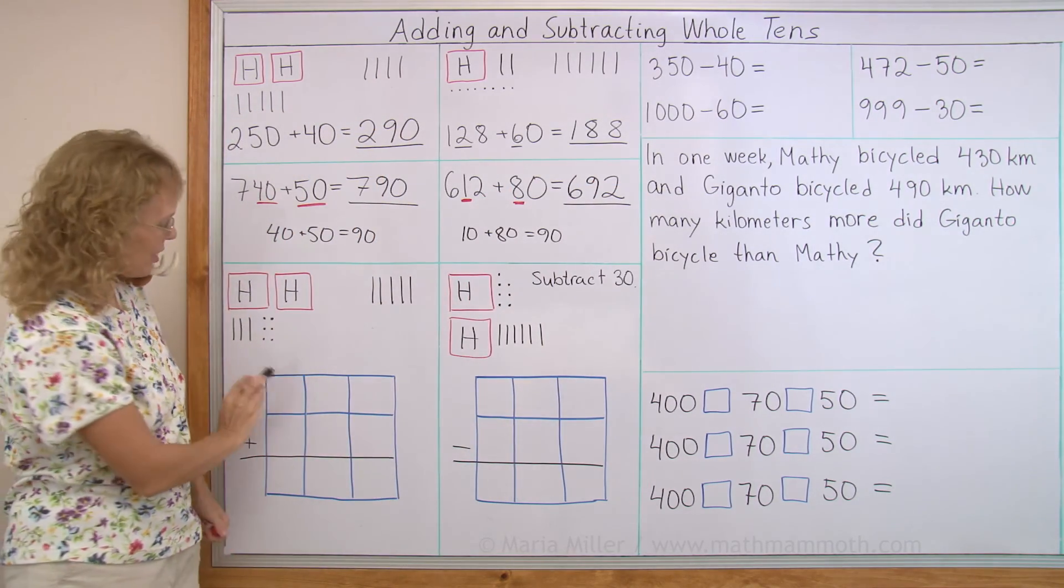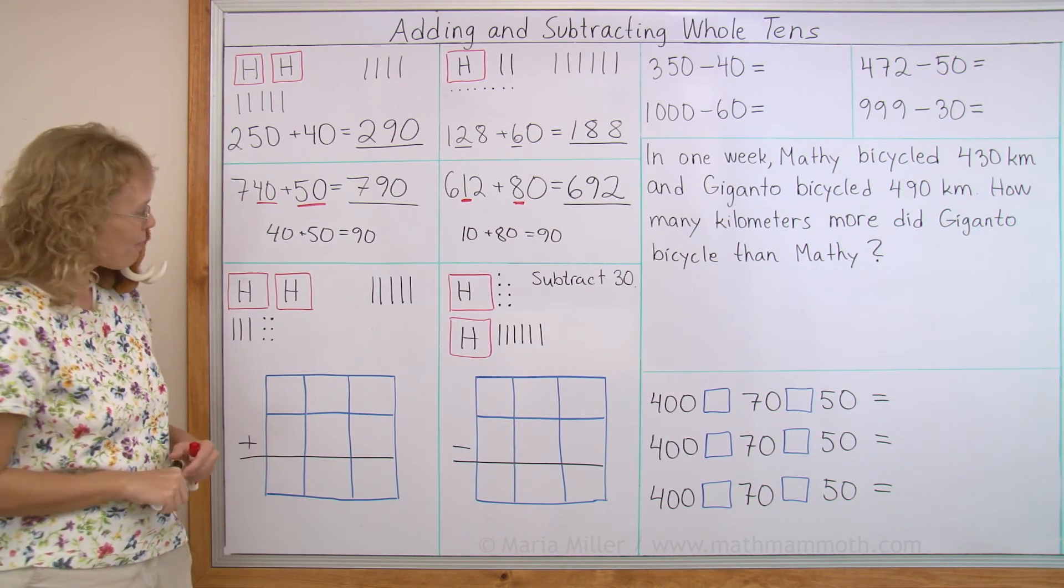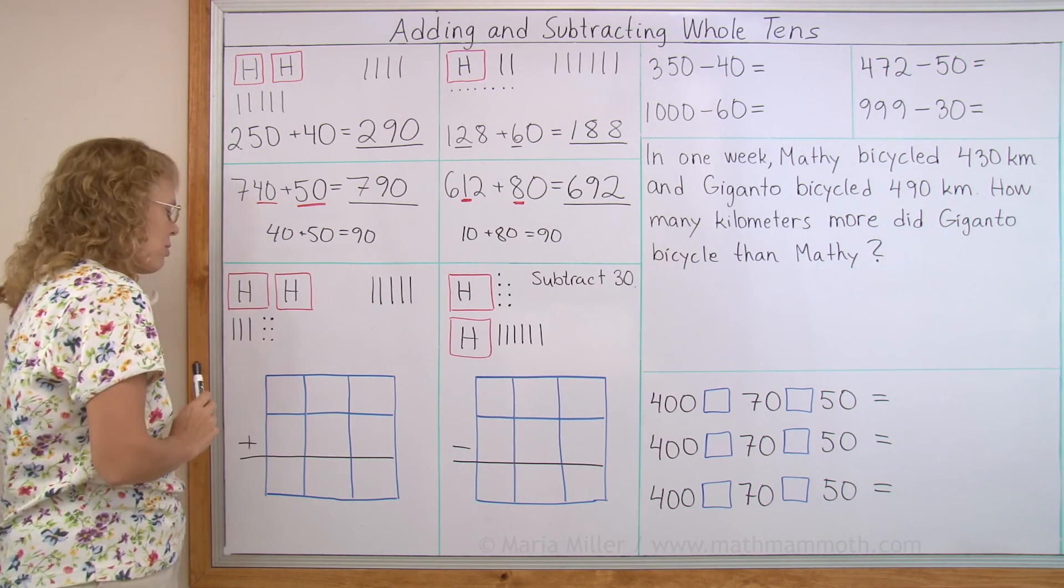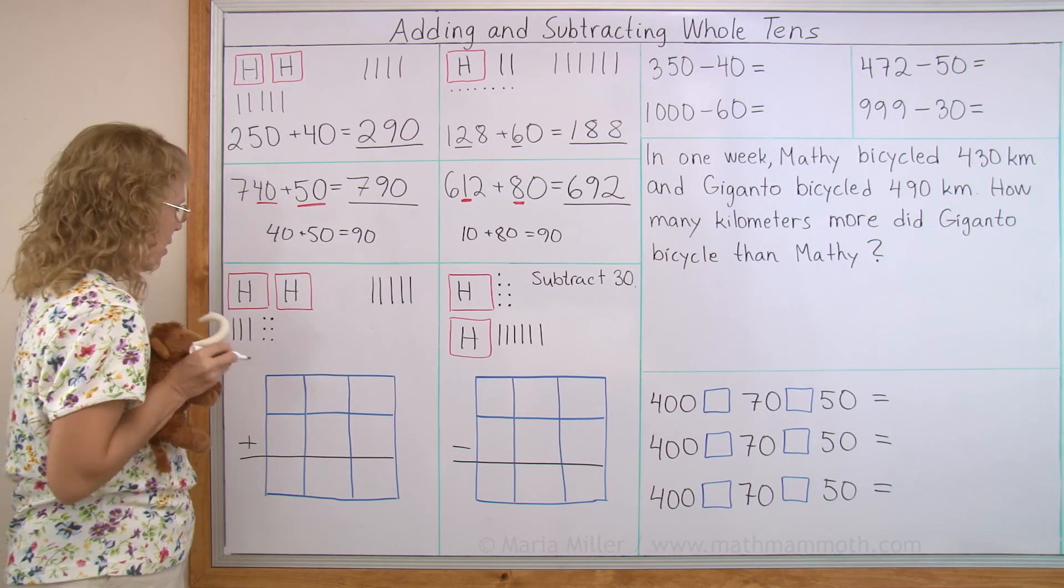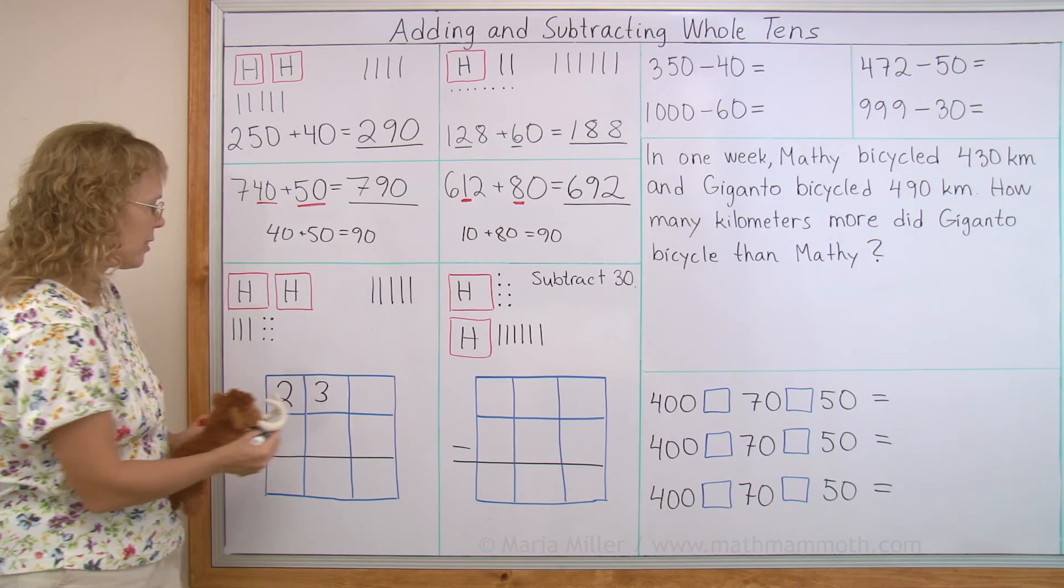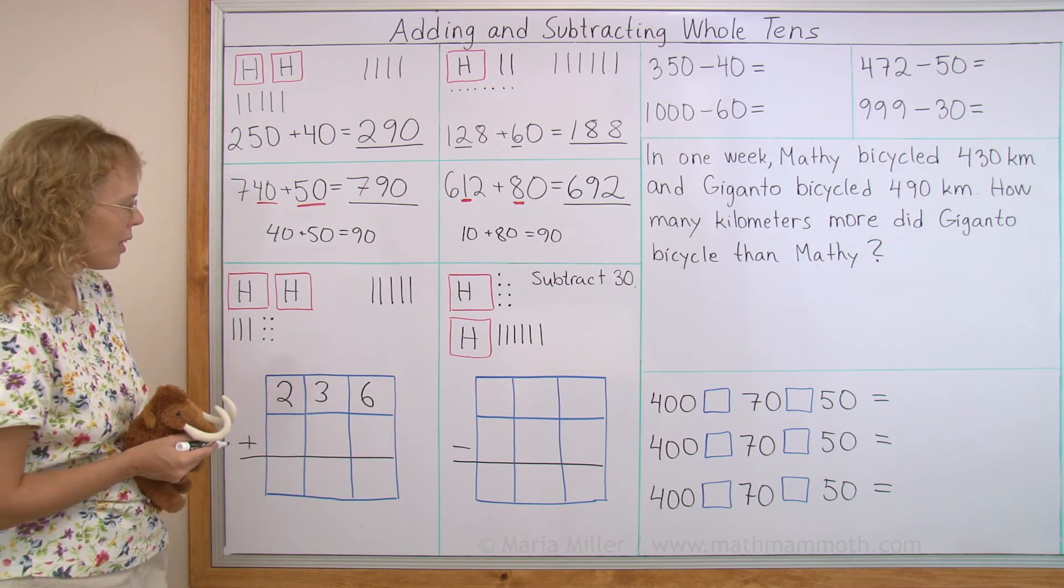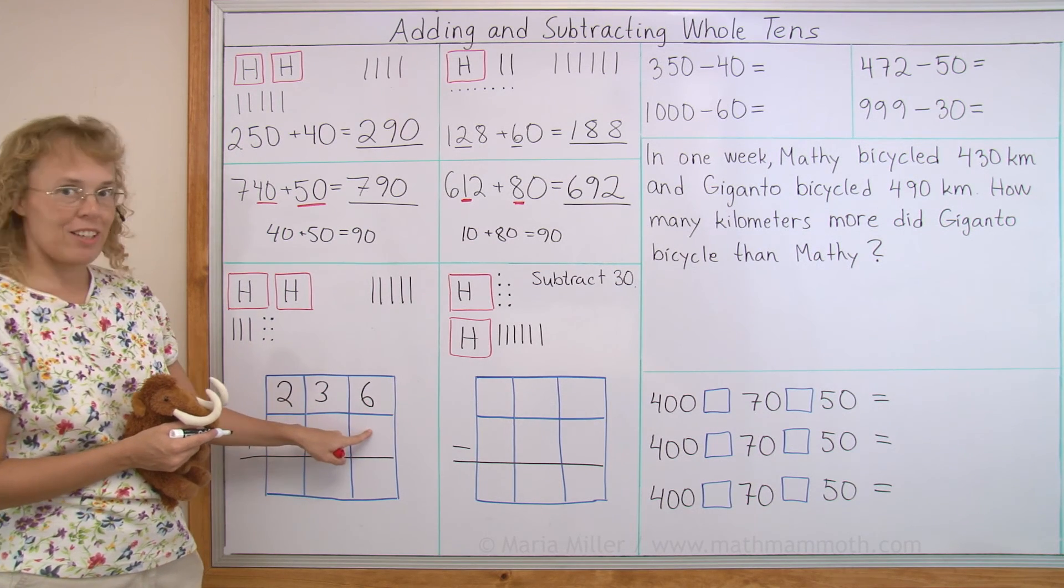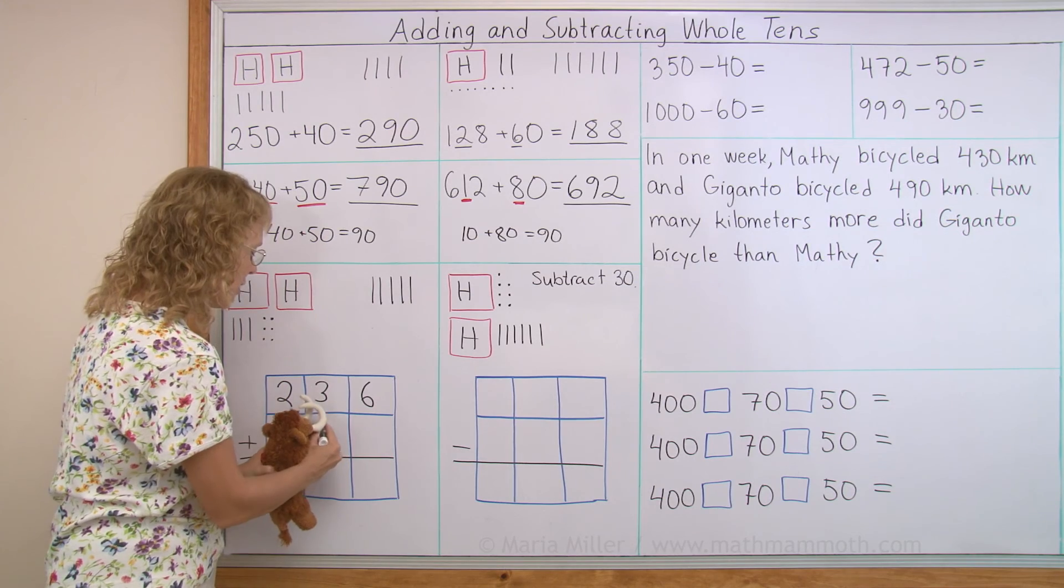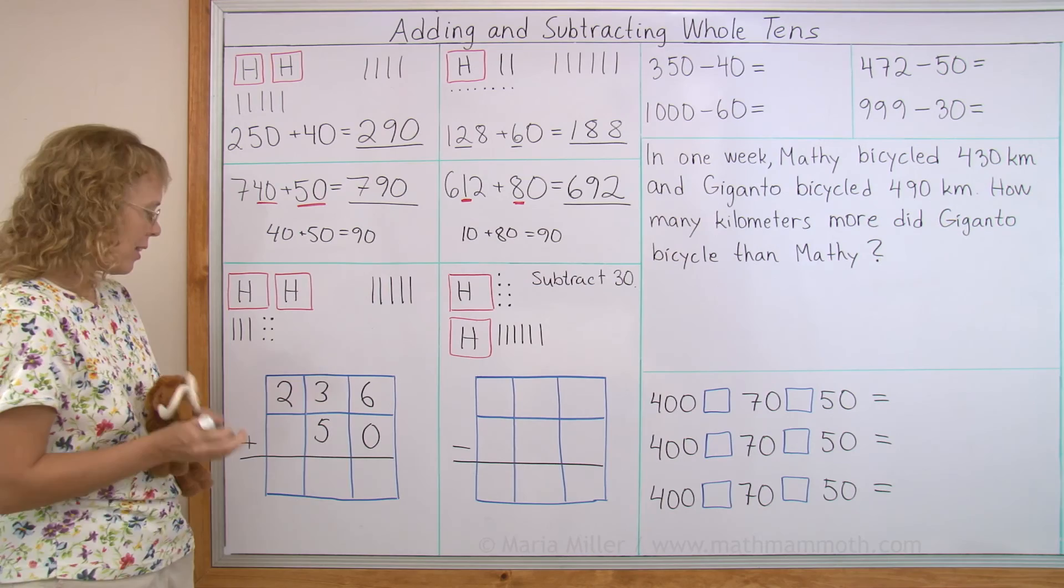Here we're going to add in columns or write the numbers under each other in this grid. This is the first number to add. So we have, what do we have? Matthew, you go write it, okay? This, yep, 200 and three tens and six. Then over here, five. Five, not five here, no, five tens. So it goes here in the tens column and then zero here. Thank you, Matthew.